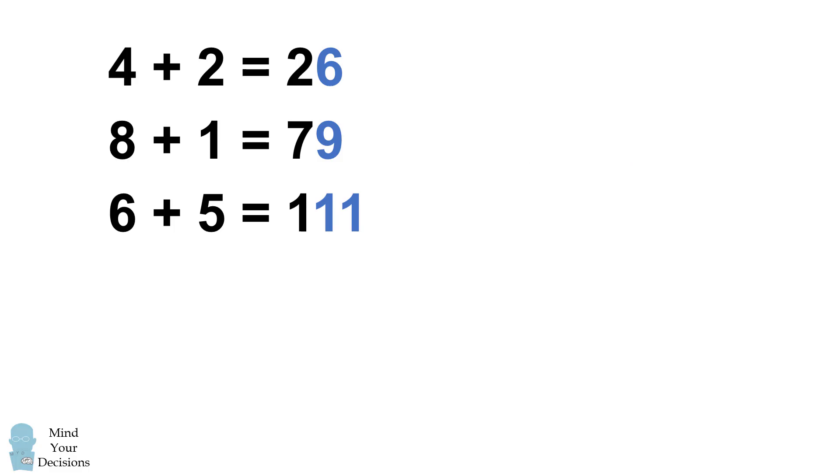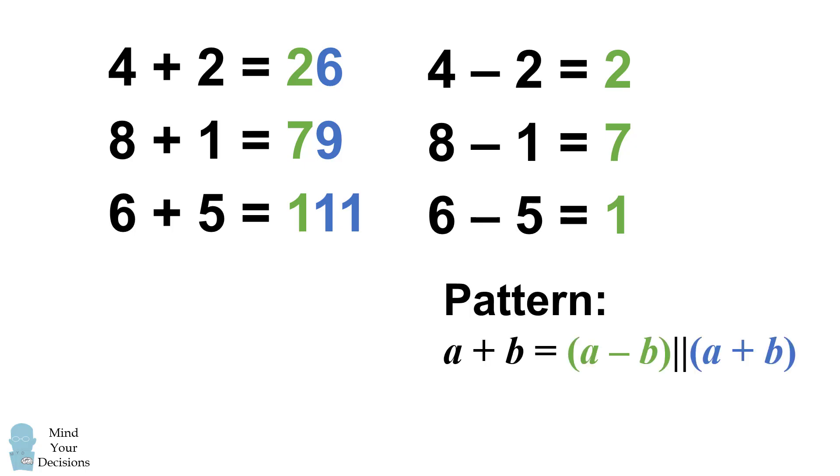Now what happens if we subtract the numbers? 4 minus 2 is equal to 2, 8 minus 1 is equal to 7, and 6 minus 5 is equal to 1. And these are the remaining numbers in the puzzle. So we figured out the pattern. To combine a and b, we take a minus b and then we concatenate that with a plus b.